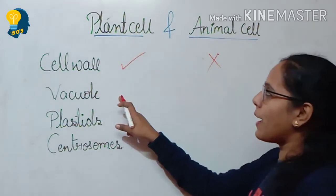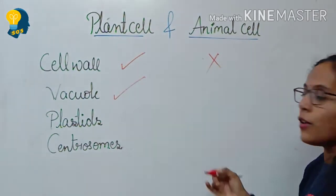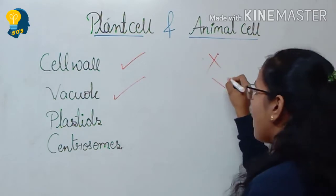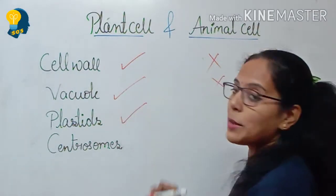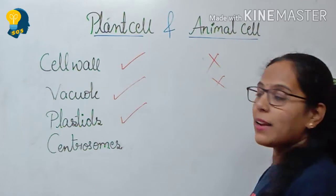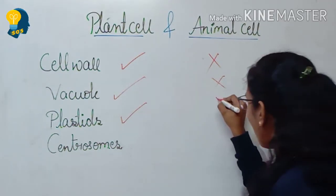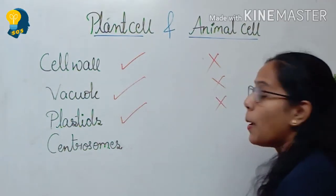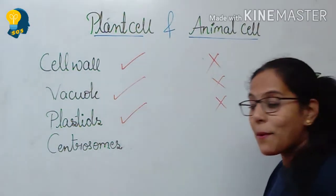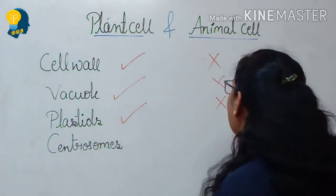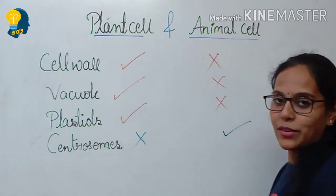When I talk about the vacuole, plant cells have vacuoles but animal cells do not. When I talk about plastids, plastids are present in the plant cell but not in the animal cell. And when I talk about centrosomes, centrosomes are present in the animal cell but in the plant cell they are absent.